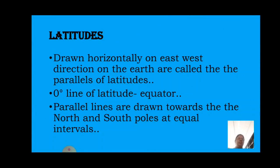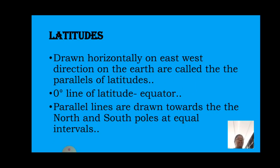We can see some lines on the globe. These are imaginary lines — imagined to be drawn but not actually drawn. Imaginary lines drawn on the globe horizontally and vertically are used to find a location and calculate distance and time. These imaginary lines are called latitudes and longitudes. Latitudes are the imaginary lines drawn horizontally in the east-west direction on the Earth, called lines or parallels of latitudes — parallels that will not touch one another.